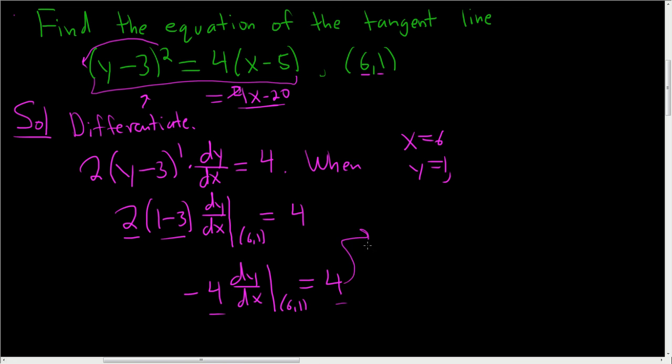So you end up with dy dx at the point 6, 1 is equal to negative 1. So that's our slope. That's our m. This is going to be the slope of our tangent line.